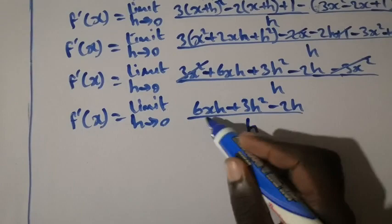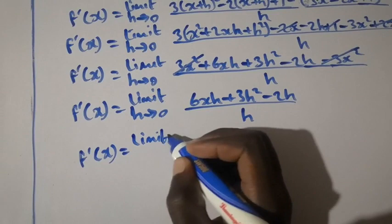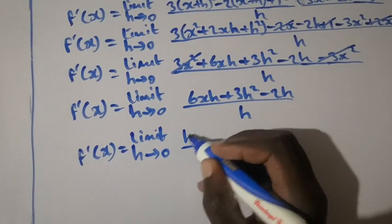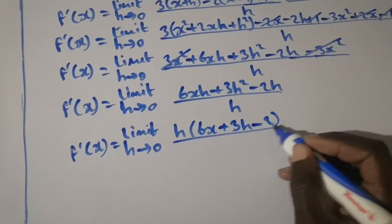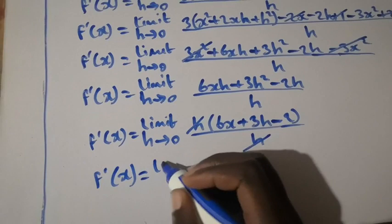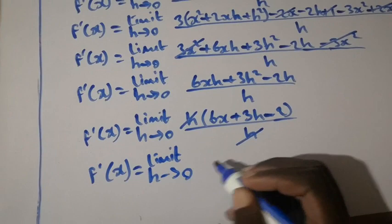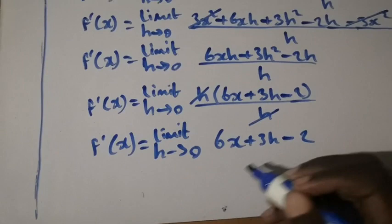At this stage we can factorize h on the numerator so that it can be removed with the denominator. When we factorize h, we remain with (6x + 3h - 2) over h. So h cancels, and f prime of x equals limit as h approaches 0 of 6x + 3h - 2.